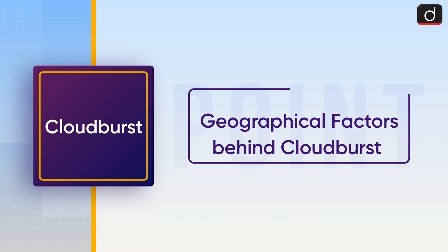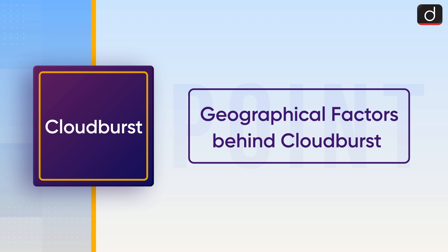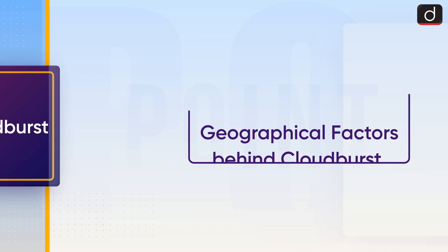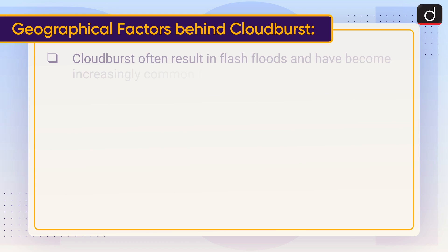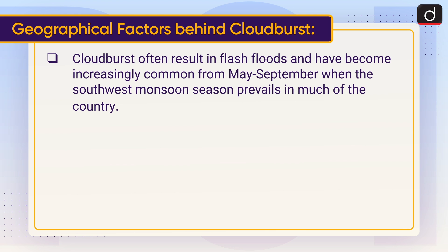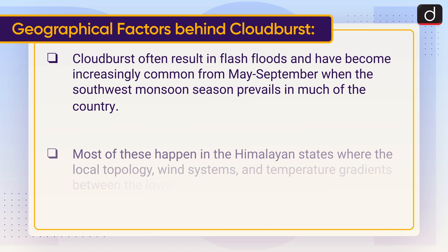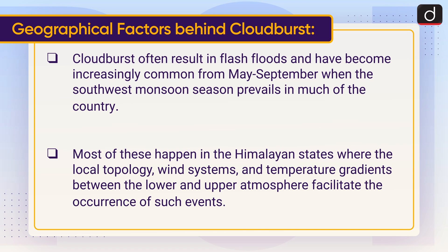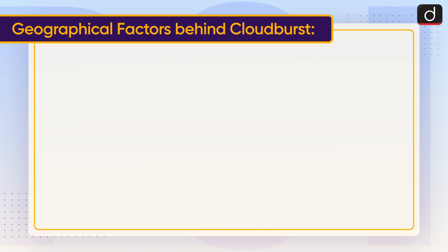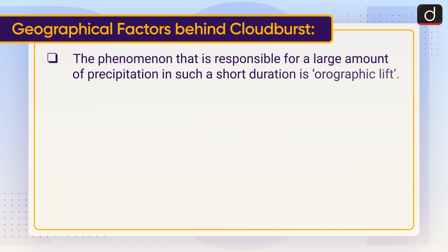Now let's look at the geographical factors behind cloudbursts. Cloudbursts often result in flash floods and have become increasingly common from May to September when the southwest monsoon season prevails. Most of these happen in the Himalayan states, where local topography, wind systems, and temperature gradients between the lower and upper atmosphere facilitate the occurrence of such events.